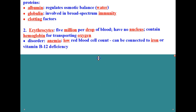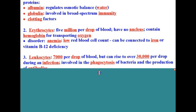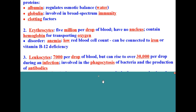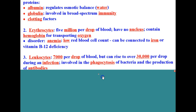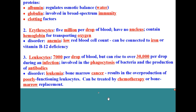The other type of cells in your body are white blood cells, which technically are called leukocytes. You have about 7,000 leukocytes per drop of blood, but it can rise to over 30,000 per drop of blood during an infection. Leukocytes are involved in the phagocytosis of bacteria and the production of antibodies to fight invaders in your body. A disorder of leukocytes is called leukemia, which is the name for bone marrow cancer. This results in the overproduction of poorly functioning leukocytes and can be treated by chemotherapy and/or bone marrow transplant.